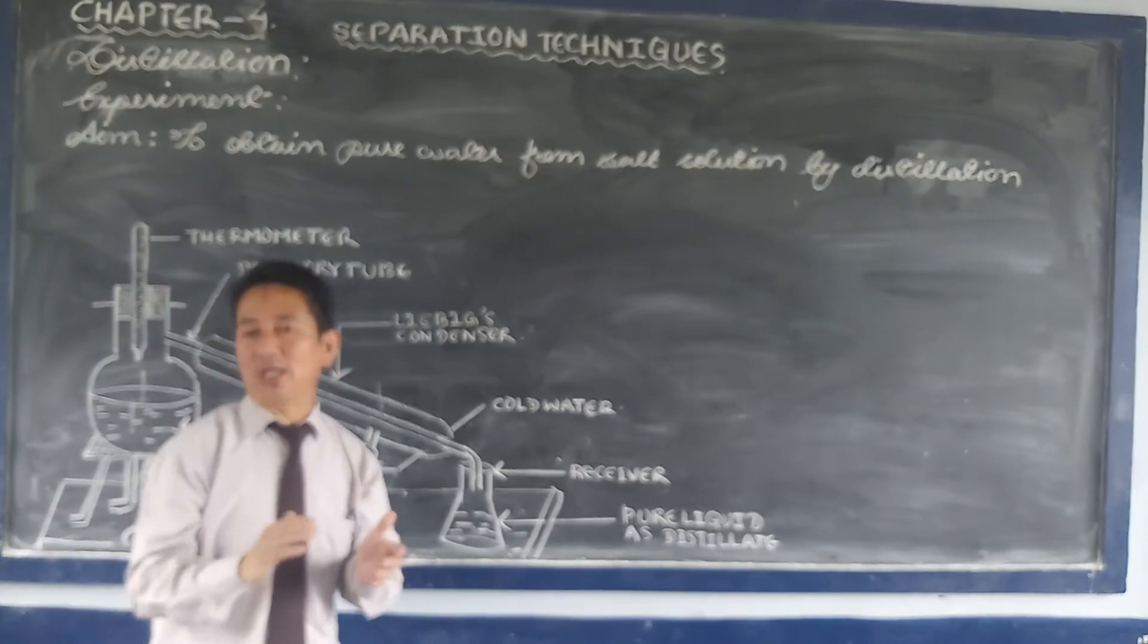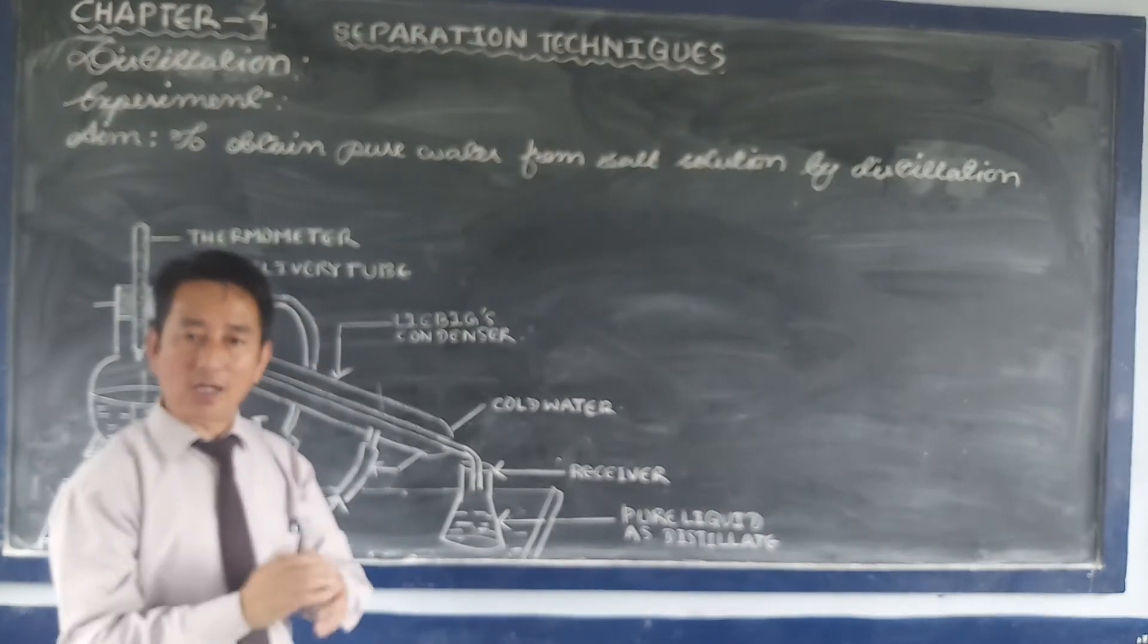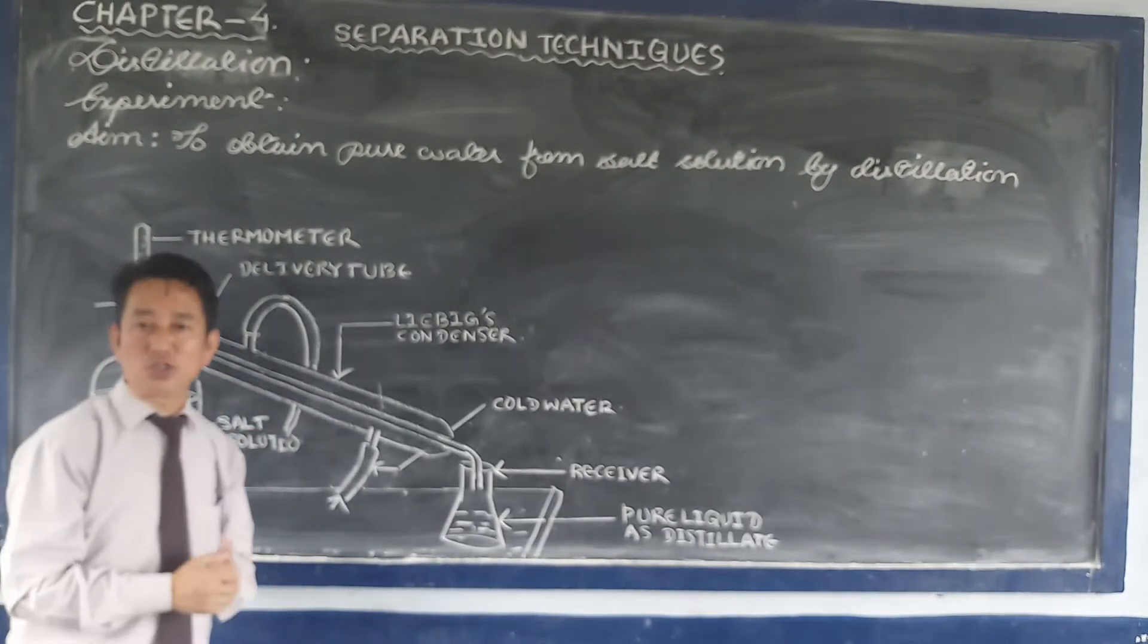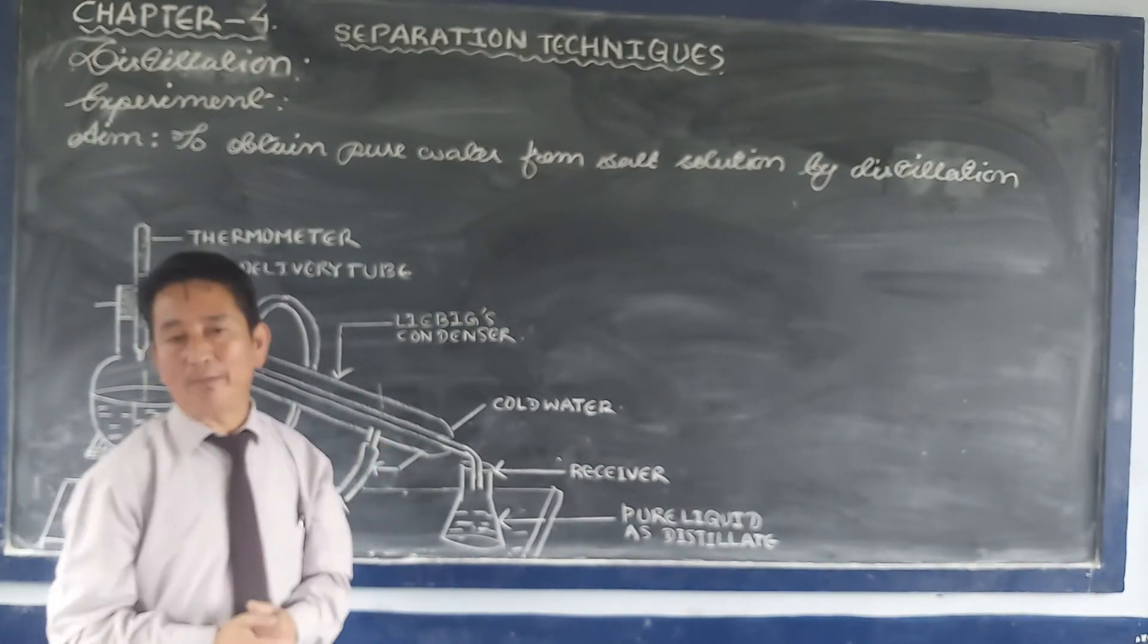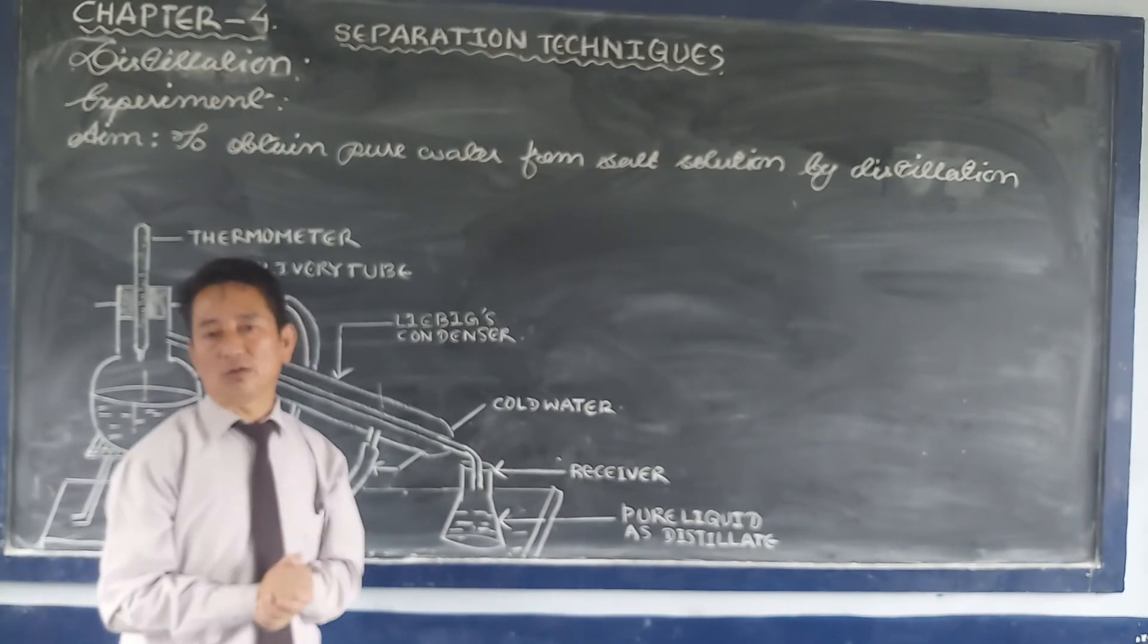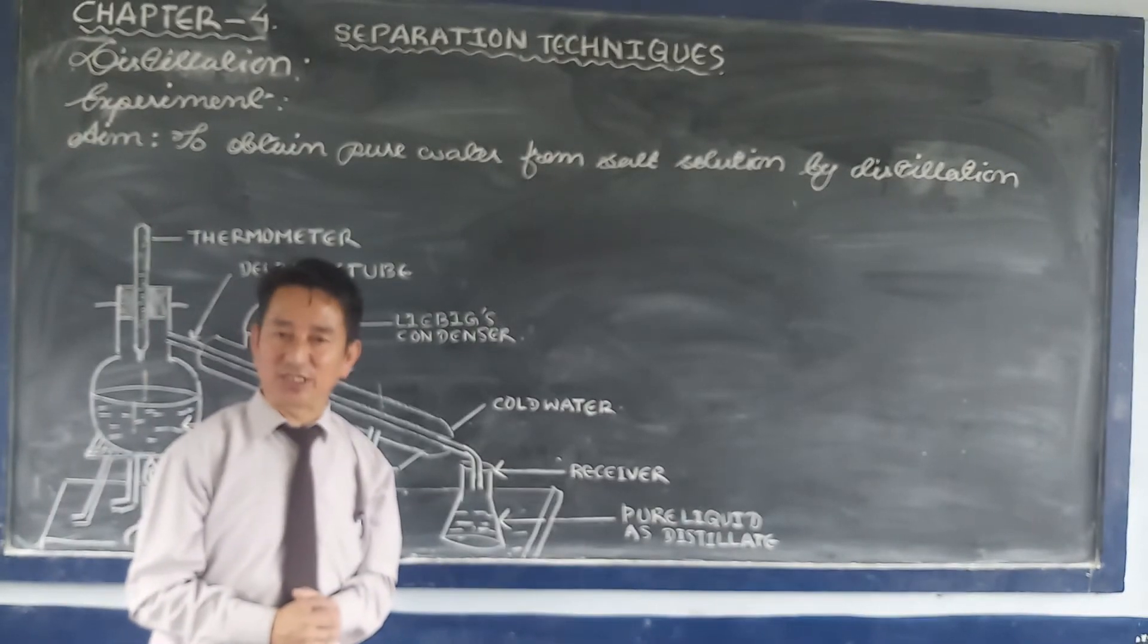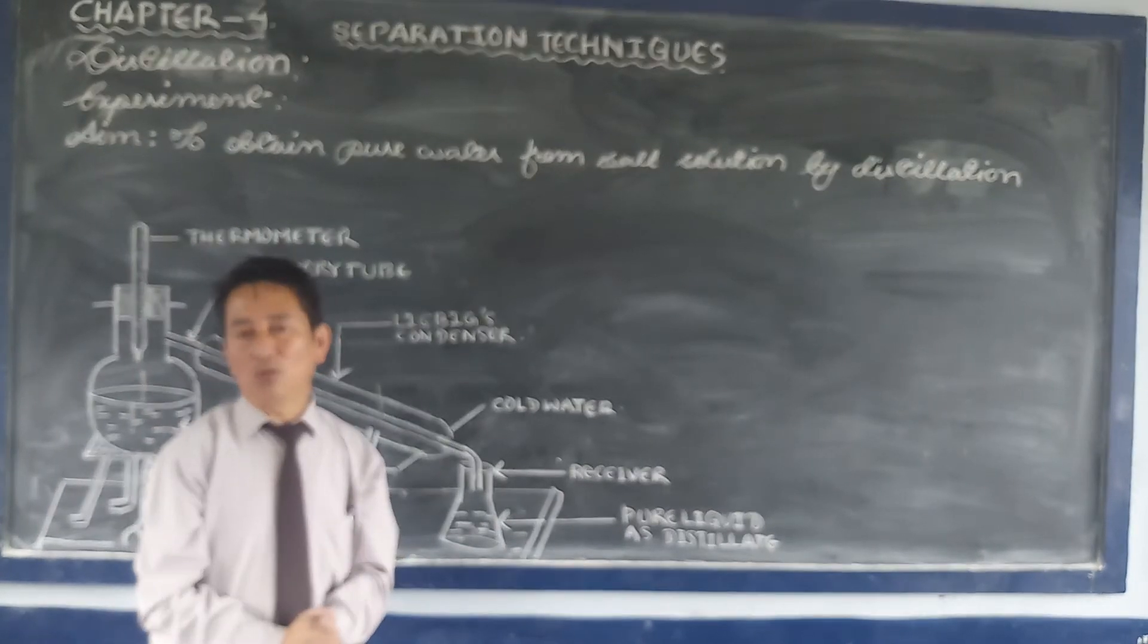What are non-volatile impurities? Non-volatile impurities are those impurities that do not change into vapors on heating. This method is employed to obtain pure liquid from a solution. Distilled water used by doctors is obtained from distillation. Seawater is also distilled to get drinking water.